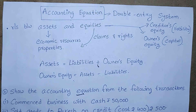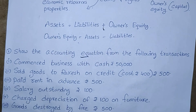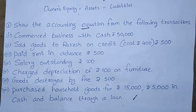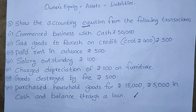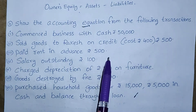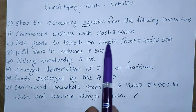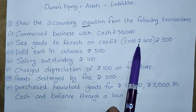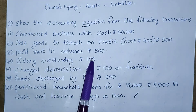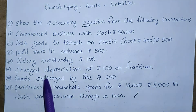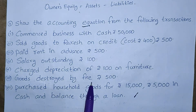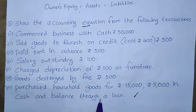Now we will discuss one problem. This is accounting equation from the fourth unit — definitely you will get a question or problem on this. If you get a theory question, write all the things we discussed step by step with key points and side headings. Now we will discuss this problem: Show the accounting equation from the following transactions. Commenced business with cash 50,000. Sold goods to Rakesh on credit — cost is Rs. 400, selling price Rs. 500. Paid rent in advance Rs. 500. Salary outstanding is Rs. 100. Charged depreciation of Rs. 100 on furniture. Goods destroyed by fire Rs. 500. Purchased household goods for Rs. 15,000 — Rs. 5,000 in cash and balance through a loan. Please try to understand the question first before solving.